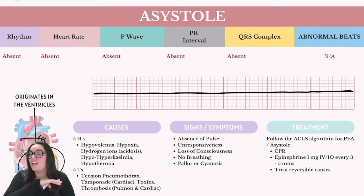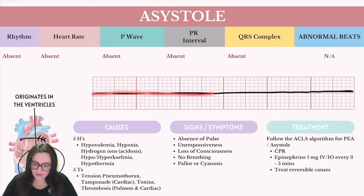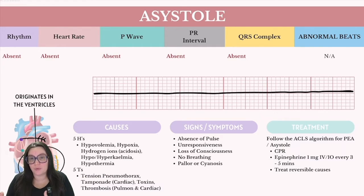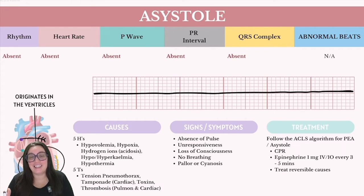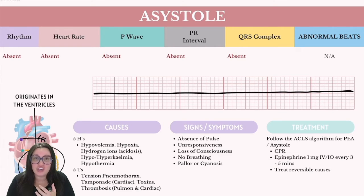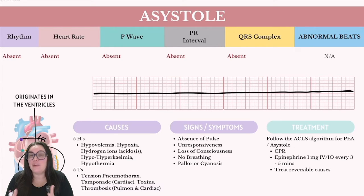Asystole is characterized as a state of no cardiac electrical activity — no movement of blood and no detectable pulse. Another common name for this is a flat line because there is no activity taking place at all. This is one of the few cardiac rhythms where defibrillation is not going to be effective, because we don't have any heart rhythm to defibrillate. Defibrillation relies on the presence of some electrical activity in order to reset it. Asystole is lethal because it represents the cessation of all cardiac electrical activity and effective heartbeats, leading to organ failure without immediate intervention.